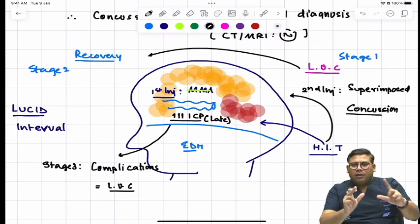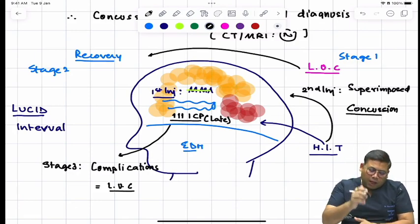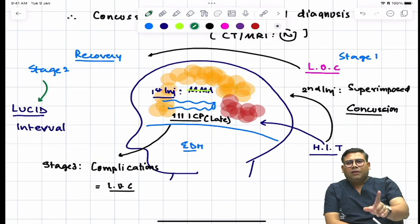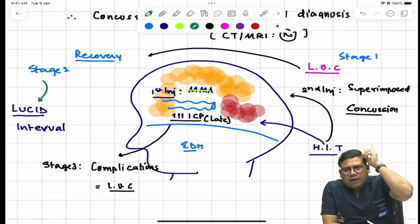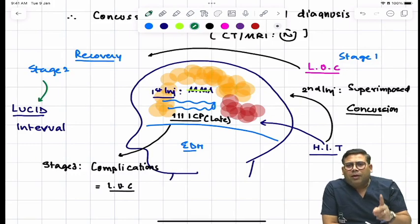So can you see, in between the two stages of loss of consciousness, you have a phase of normal neurological behavior, and that is what is known as lucid interval. So remember, lucid interval is not due to EDH. Lucid interval can be seen in any head injury which is associated with high impact blunt trauma.